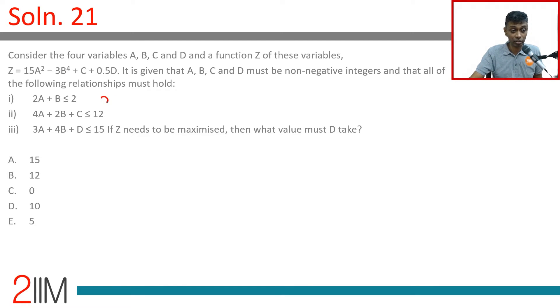Non-negative integers: 2A + B ≤ 2. 4A + 2B + C ≤ 12.